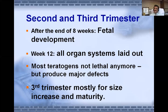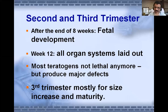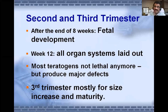The second and third trimesters are mostly for increase in size and maturity — nothing dramatically new is happening. After eight weeks, fetal development begins, continuing from the ninth week to completion of the ninth month. By week 12, all organ systems are laid out. Teratogens may still produce major defects. The third trimester — months seven, eight, and nine — is for final growth. The baby can be born in the seventh month as preterm; completing nine months makes it full term with a fully matured fetus.